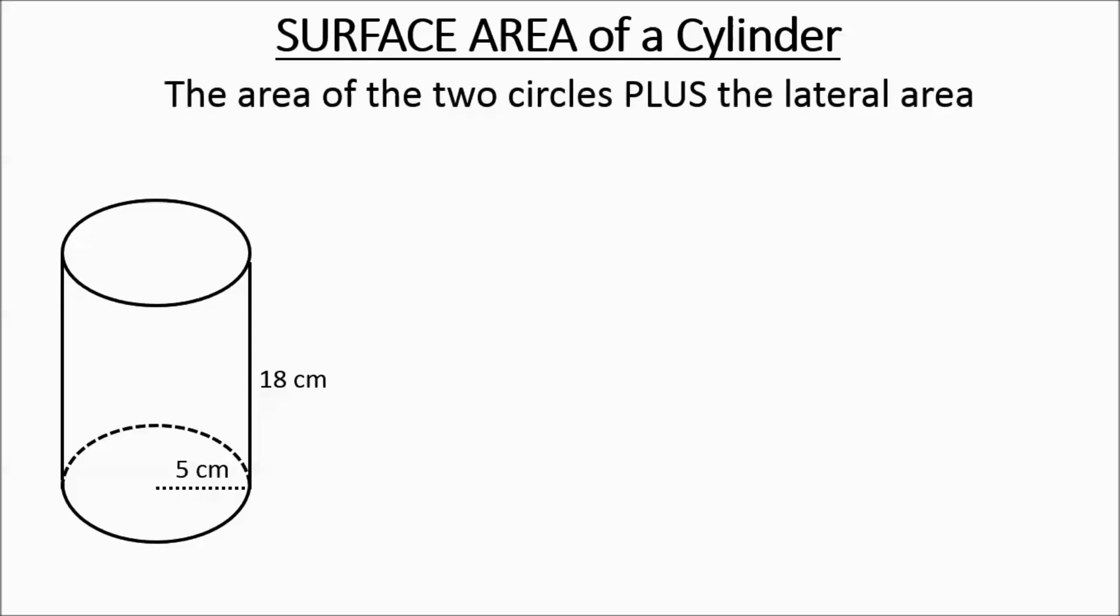Surface area is taking the area of the two circles and adding it to the lateral area, which is the rectangle. So surface area is 2 pi r squared plus 2 pi r h. So the first part of this formula takes care of the two circles.